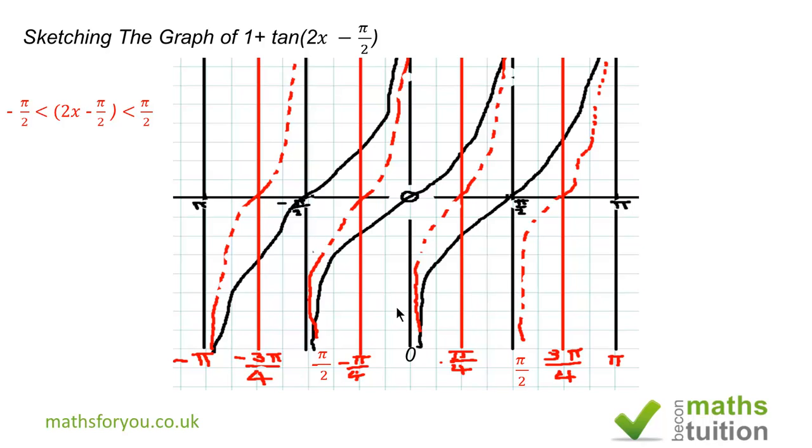If we now add π/2 to each term, we end up with 2x is greater than 0 and is less than π. In effect, 2x is greater than 0 and is less than π.